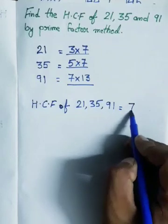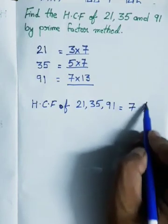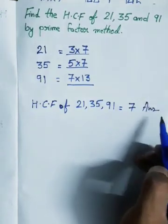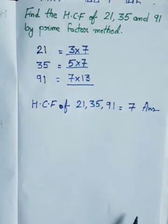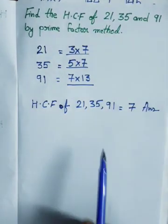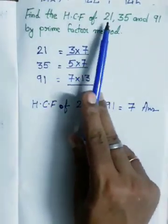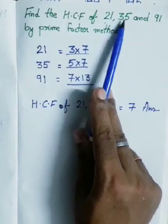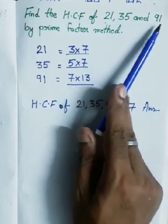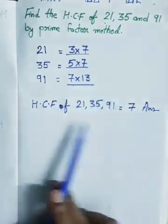So the highest common factor is 7 — this is the answer. The highest common factor is the number which divides all the given numbers. 7 divides 21, 7 divides 35, and 7 divides 91. So the highest common factor is 7.